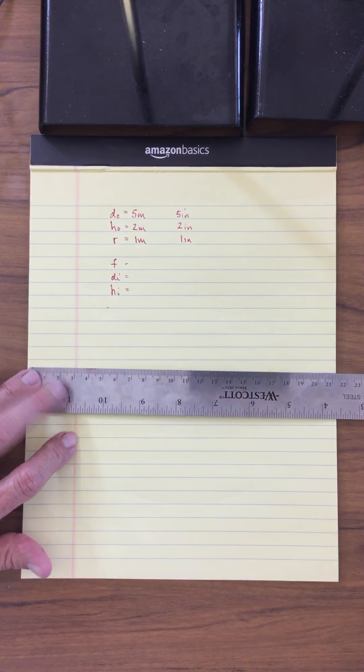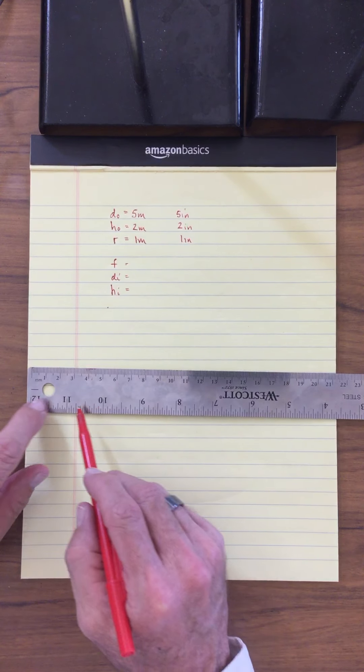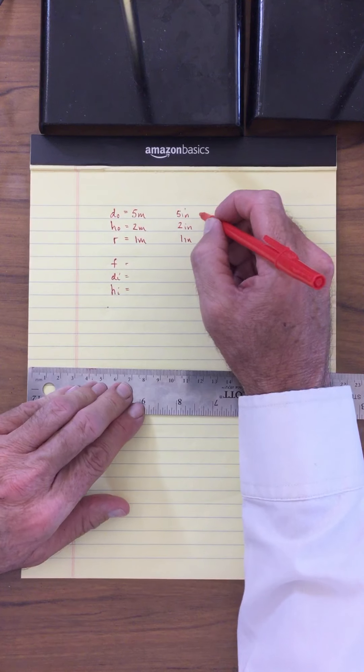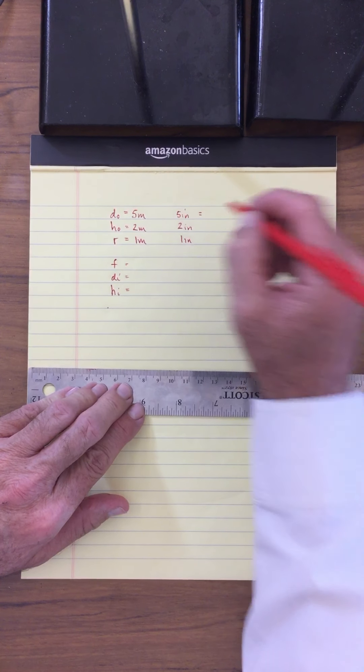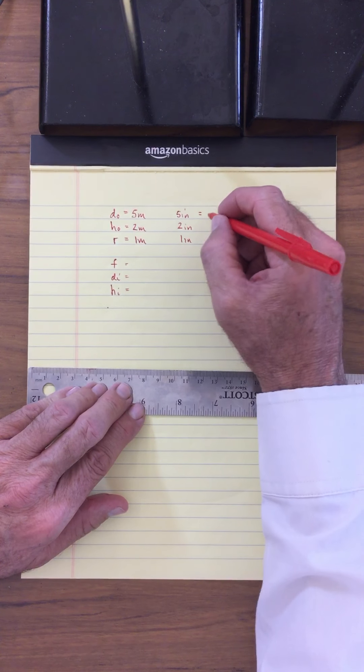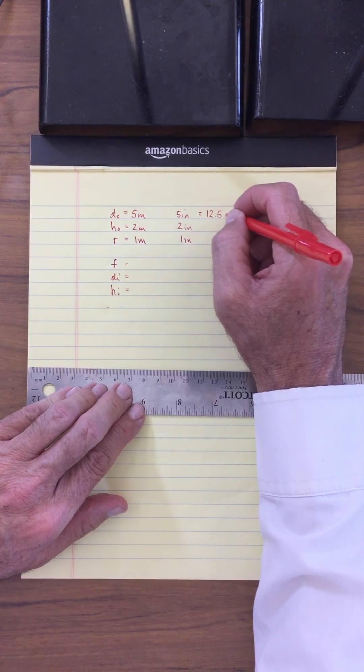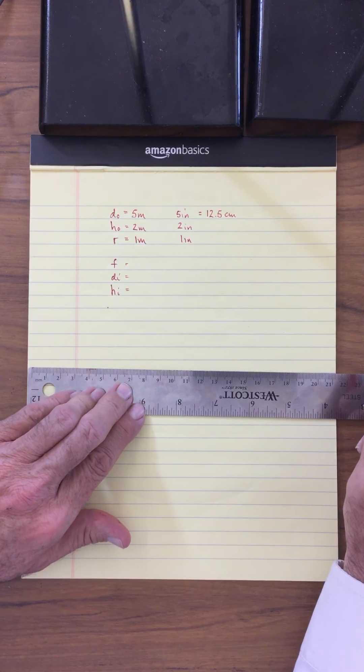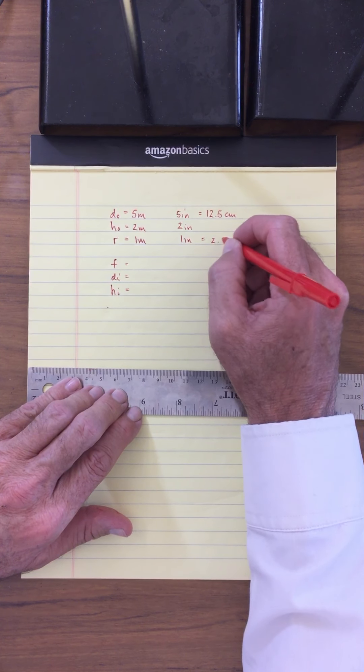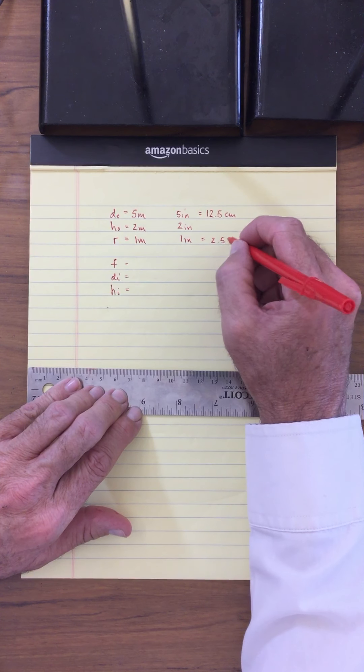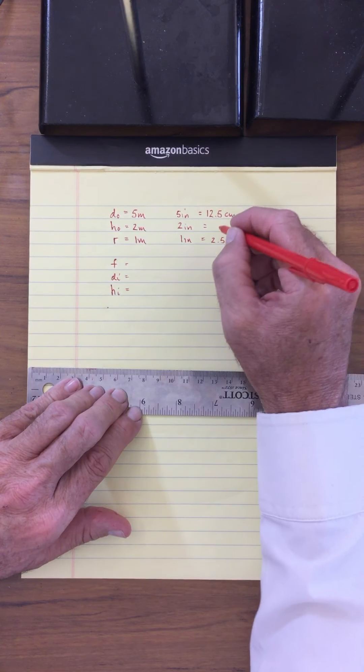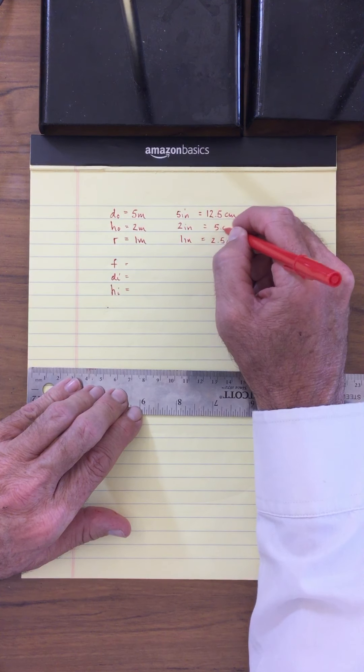Okay, 5 inches is roughly about 12.5 centimeters approximately. We're not going to use these for our calculations, we're just going to use these for our drawing. So it's about 12.5 centimeters. Well 1 inch is 2.54 centimeters, or just 2.5 centimeters. So therefore 2 inches will be 5 centimeters.